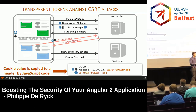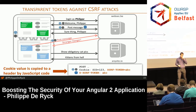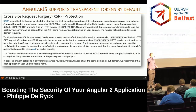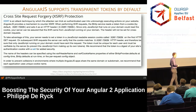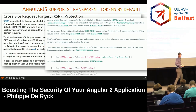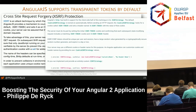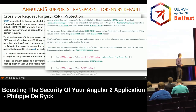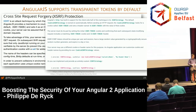Angular 1 enables this by default with the transparent token mechanism — it looks for the cookie and copies it to the header on outgoing requests. Angular 2 is the same: enabled by default, configurable if you use different cookie names. You don't need to do anything on the client. You need to enable this on your backend — once you set the CSRF cookie, which is straightforward in any backend, you can easily enable this behavior.